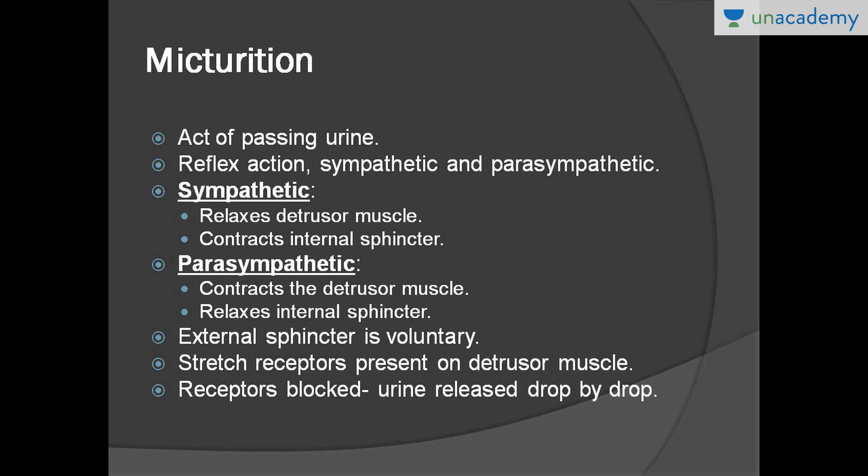When the urinary bladder is half full, the detrusor muscle begins to stretch — especially at the trigone region, which has stretch receptors on the detrusor muscle. When activated, these stretch receptors send a signal to the central nervous system, from where there is a voluntary motor command on where and when to void urine, only when it is socially acceptable.